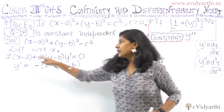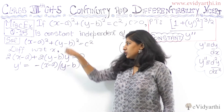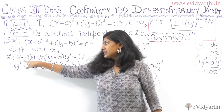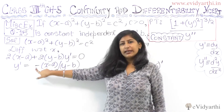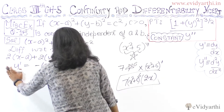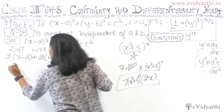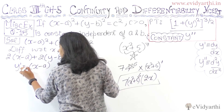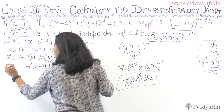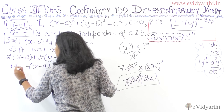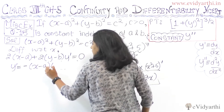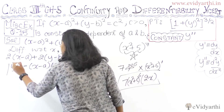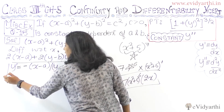Let's simplify: 2 from 2 cancels, and moving the first term to the right-hand side gives a negative. So y-prime equals minus (x minus a) upon (y minus b). We mark this result and put it aside for later use.